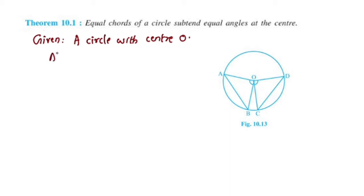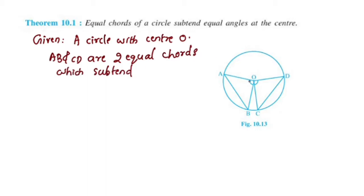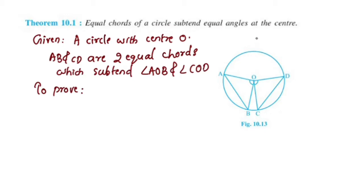AB and CD are two equal chords which subtend angles AOB and angle COD respectively. What we have to prove is that equal chords of a circle subtend equal angles at the center — that is, angle AOB is equal to angle COD. Now let's prove these two angles are equal.